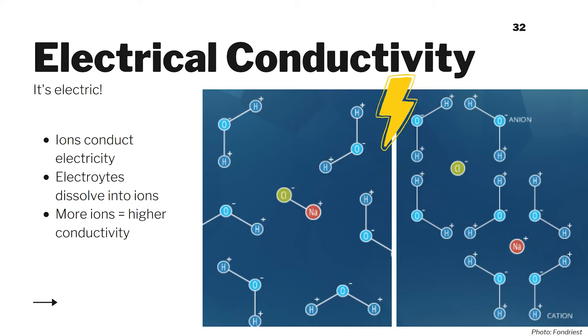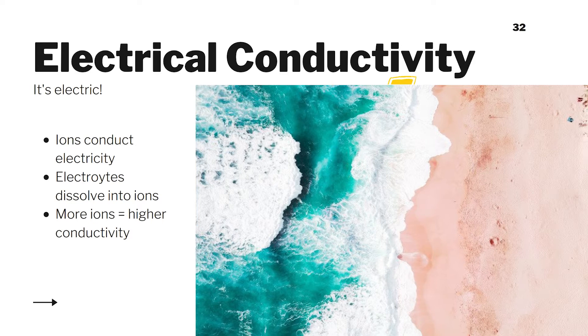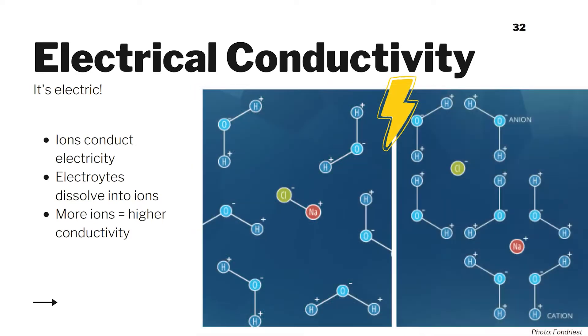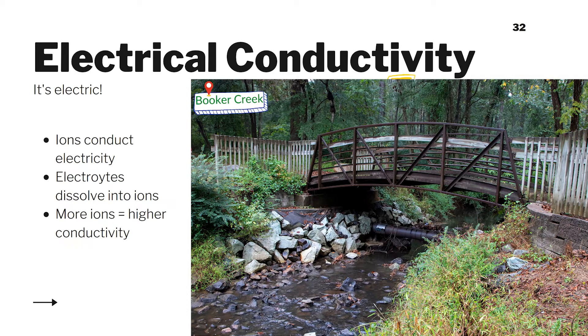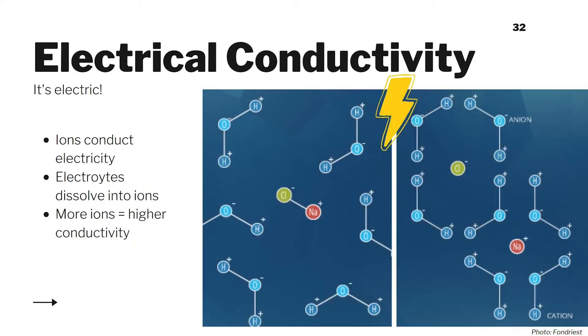Likewise, the fewer ions that are in the water, the less conductive it is. Seawater, for example, has a lot of salt in it so has really high conductivity. Our streams, on the other hand, should have pretty low conductivity.